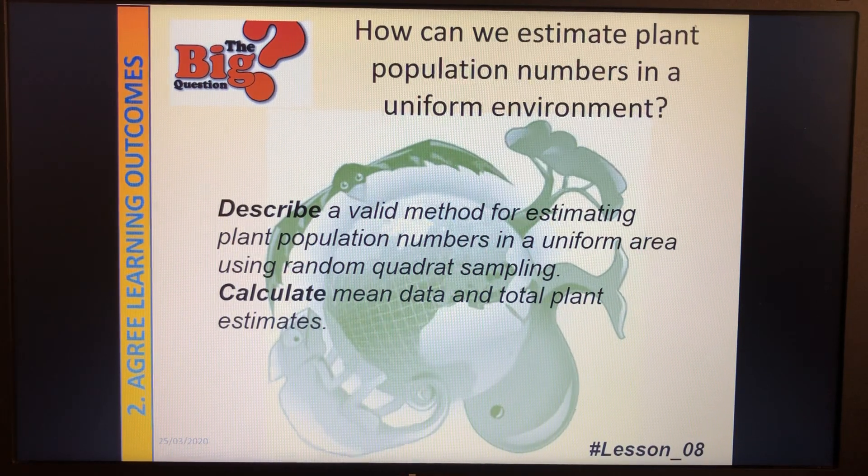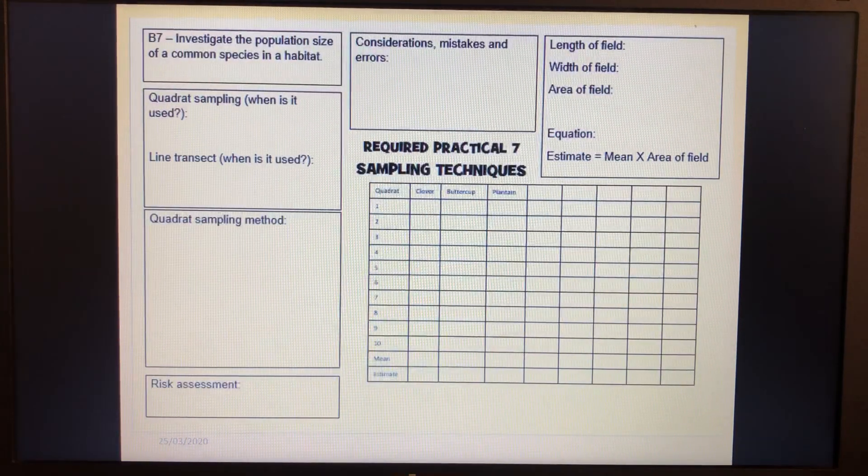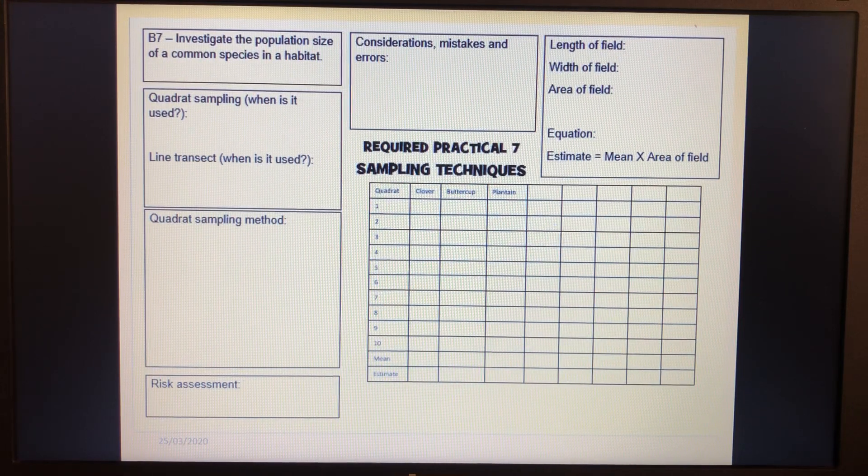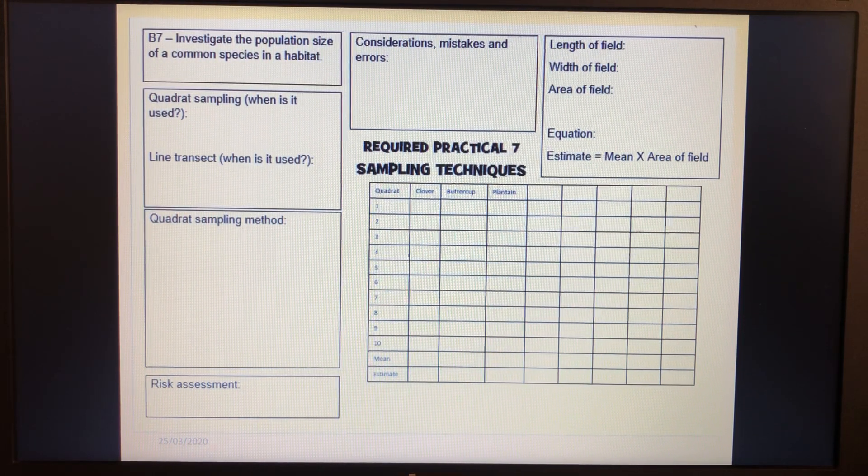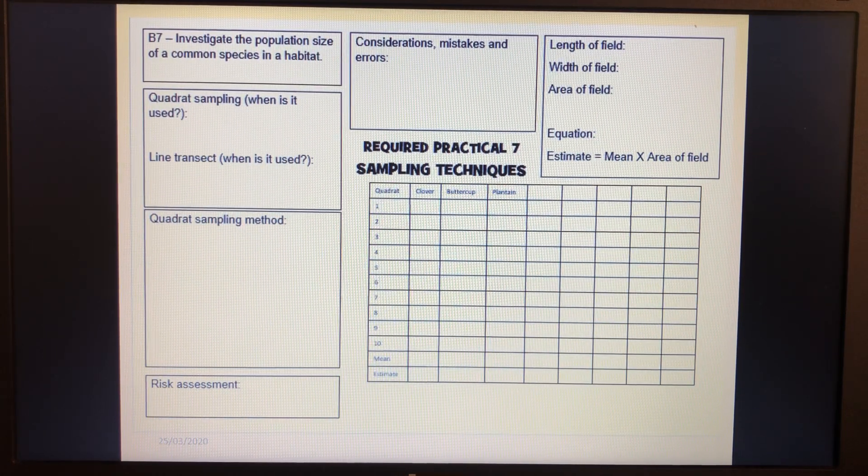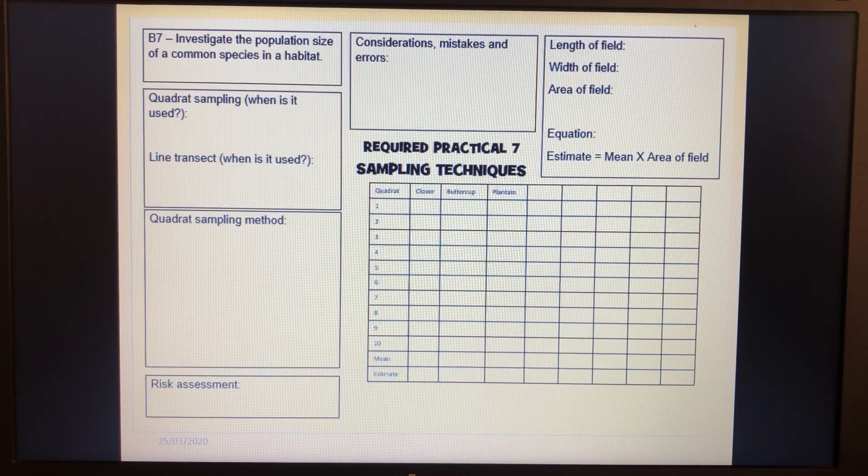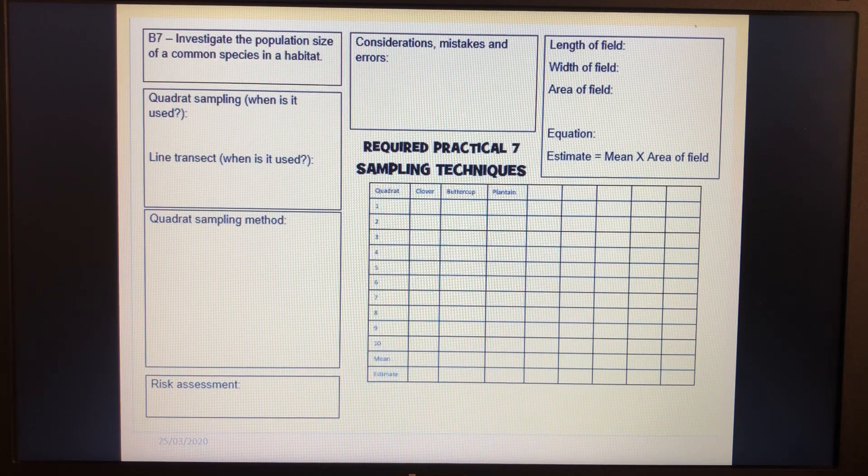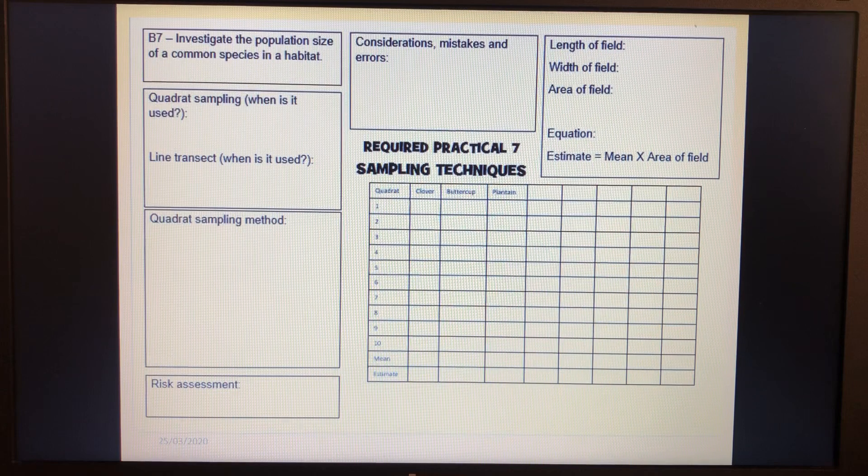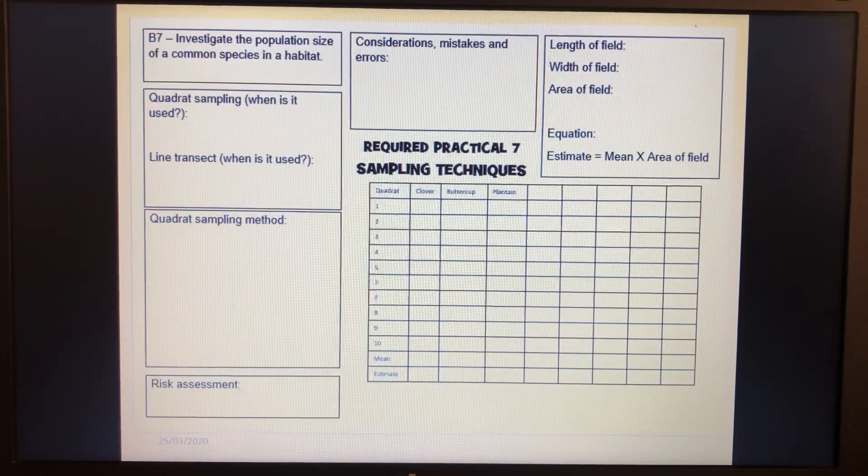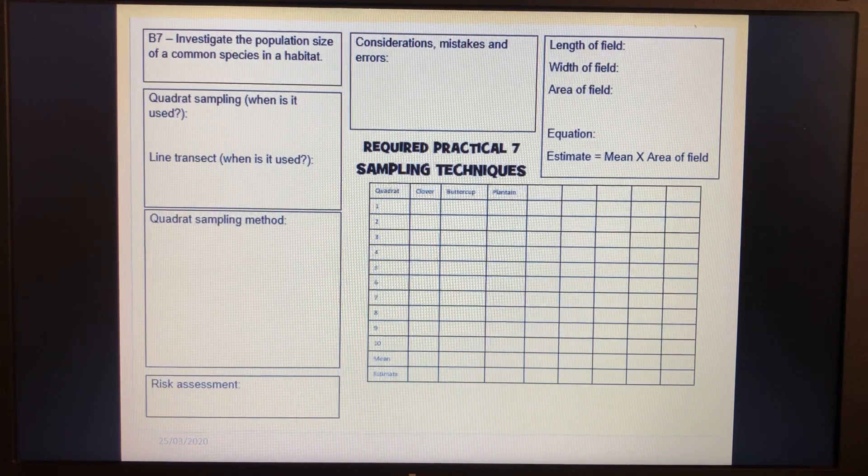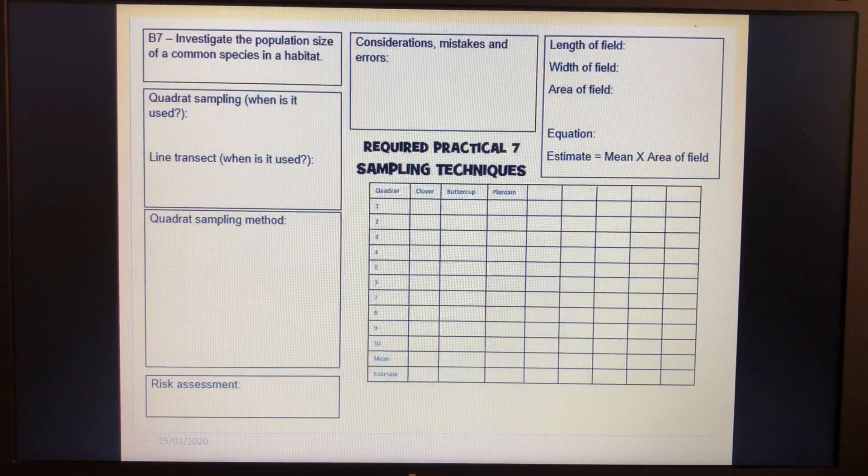So I'm just going to move along quickly just to show you that this is what the required practical placemat looks like for sampling techniques. So we'll put our data in there. We've got data about how we look at the area of the field and stuff like that. And the other side, so we've got a bit of area there for the method risk assessment. Don't throw the quadrat at someone's head. And then the other side of this is looking at transect lines. And that's what we're looking at next lesson.